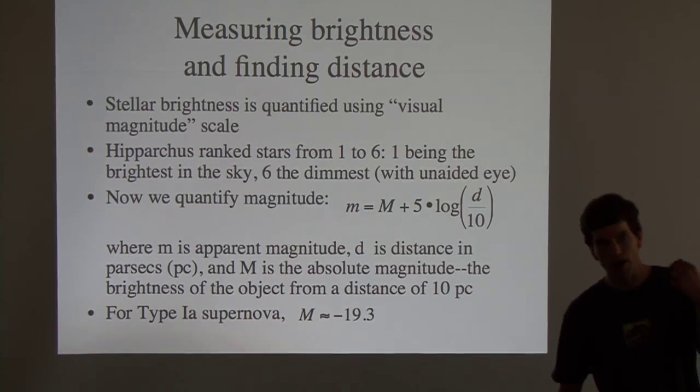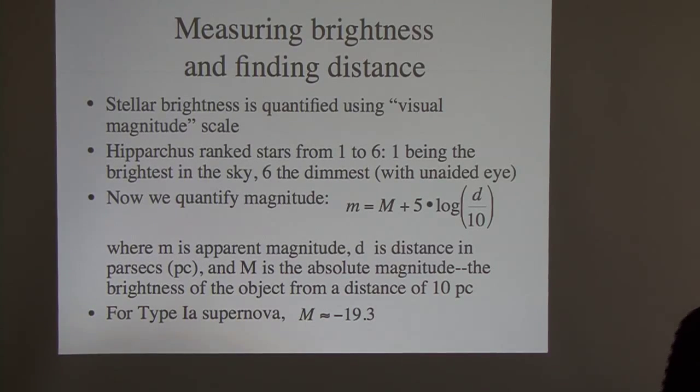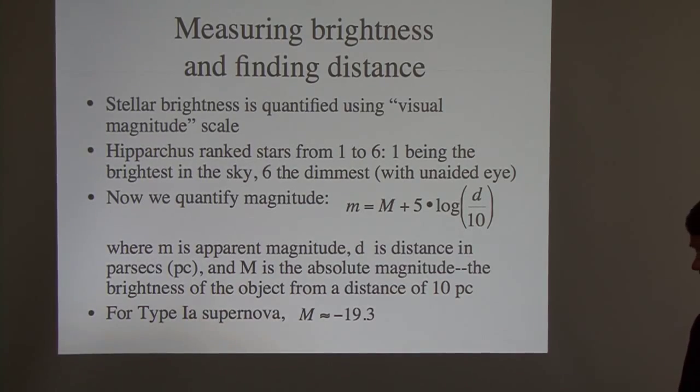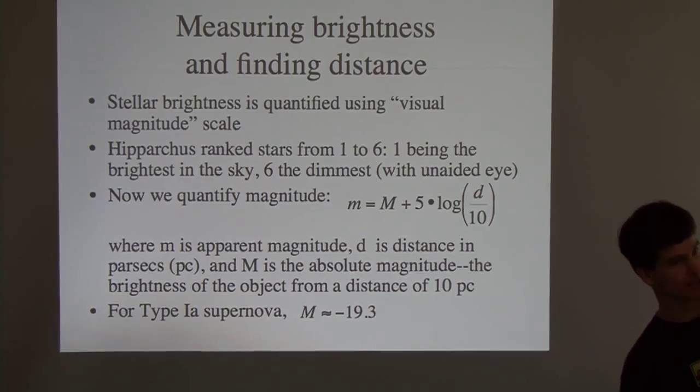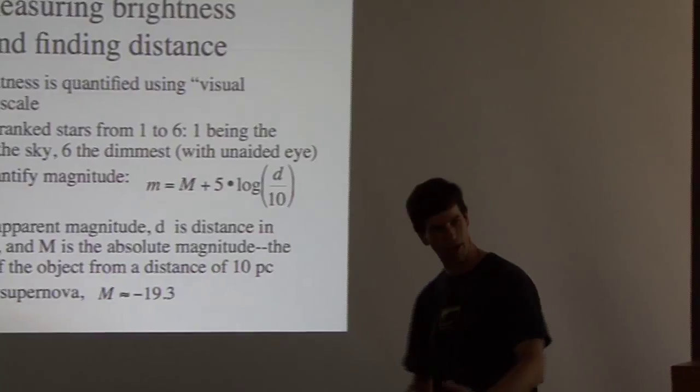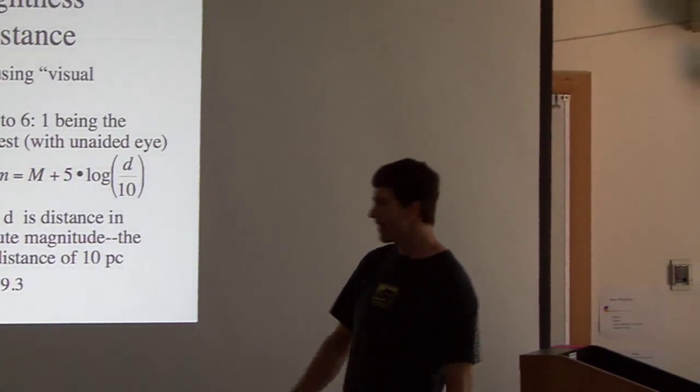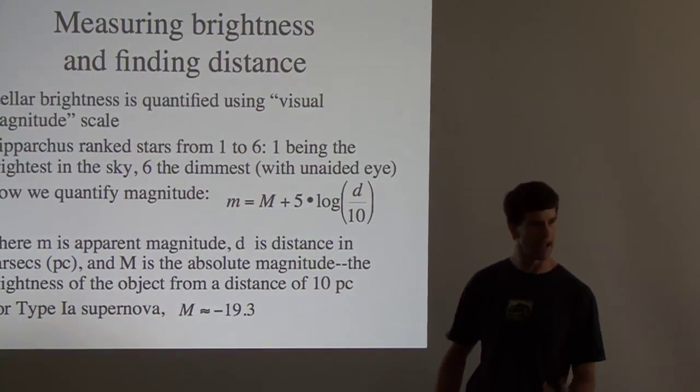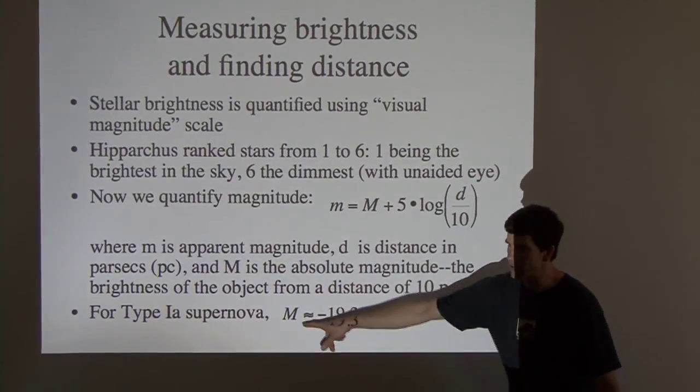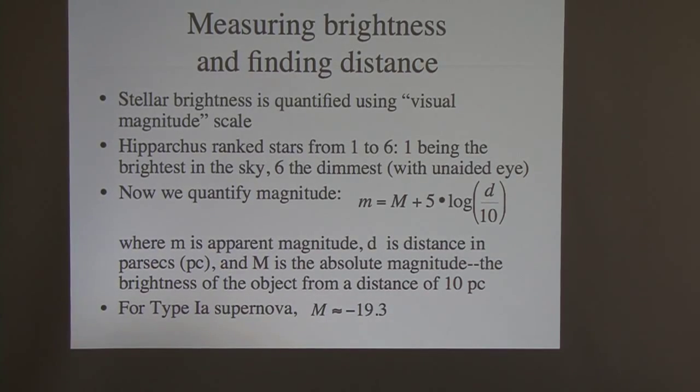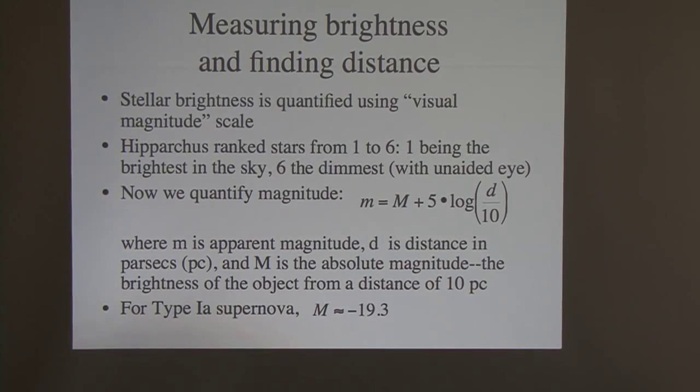We talk about that scale where 1 is really bright and 6 is dim. Well, what if something is brighter than a category 1 star? What do you give it? Well, if it's brighter, maybe it becomes a 0. And if it's brighter than 0, maybe it becomes a negative 1. And if it's brighter than that, maybe it's a negative 2, right? And so that visual magnitude scale can also have a negative side to it, where really bright things could have negative numbers. Well, the absolute magnitude, the intrinsic brightness or the luminosity of that type 1a supernova is about negative 19.3. A very large negative number, meaning it puts out lots and lots of light.